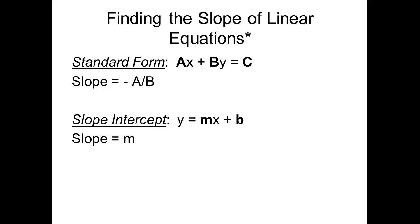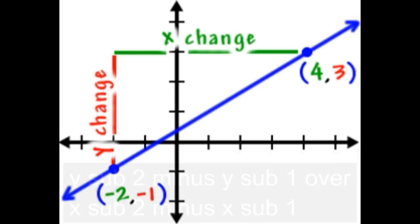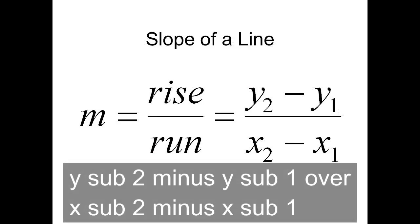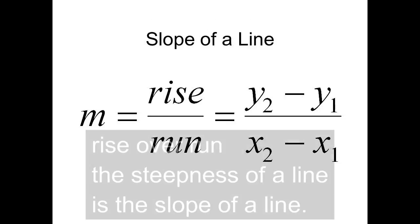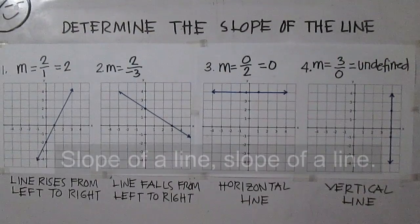What's the slope of a line? Y sub 2 minus Y sub 1 over X sub 2 minus X sub 1. Rise over run — the steepness of a line is the slope of a line.